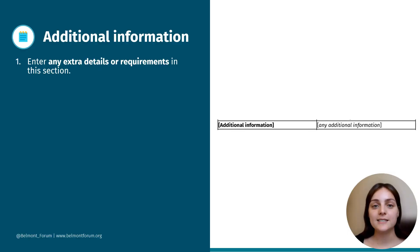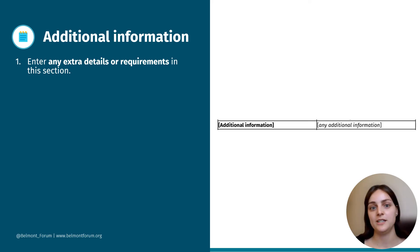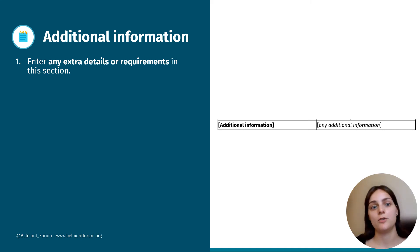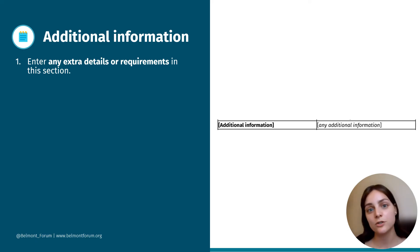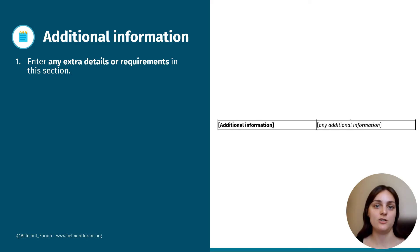Box ten is additional information. This section is for you to include any supplementary or specific requirements that may not neatly fit into the other sections of the form. For instance, your institution might require additional documentation around partnerships, mentorship, and/or gender equity. Please utilise this section to provide any pertinent information that ensures clarity and accuracy.